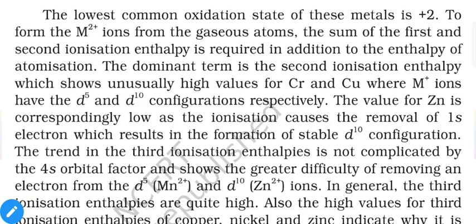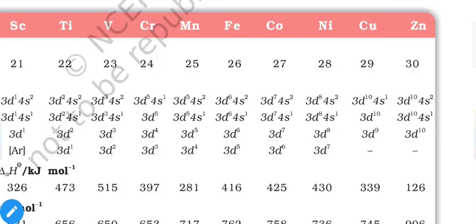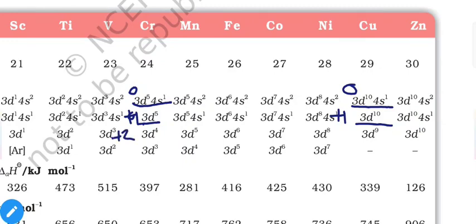The dominant term is the second ionization enthalpy, which shows usually high values for Cr and Cu, where the M⁺ ions have d⁵ and d¹⁰ electronic configurations respectively. At zero oxidation state, both Cr and Cu have their special configurations; at the +1 oxidation state, both have d⁵ and d¹⁰ configurations. To obtain the +2 state, we need to transform a stable state into an unstable state in both cases, since d¹⁰ is stable and d⁹ is unstable.